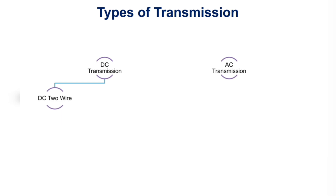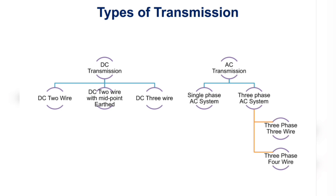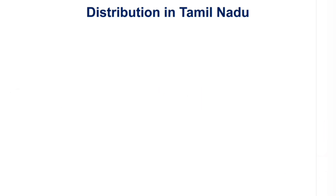When considering the various types of distribution systems, it may be a DC system or an AC system. In DC systems, it includes DC two-wire, DC two-wire with midpoint earth, and DC three-wire systems. In AC systems, it includes single-phase and three-phase systems. The three-phase system may be three-phase three-wire or three-phase four-wire. Typically, three-phase three-wire is used in primary distribution, while three-phase four-wire is used in secondary distribution.